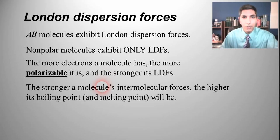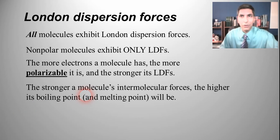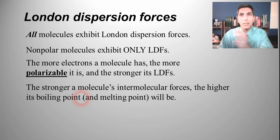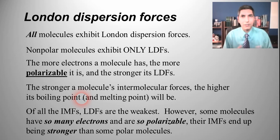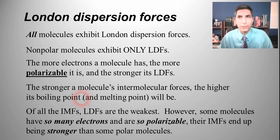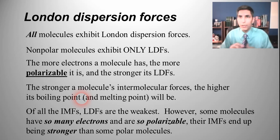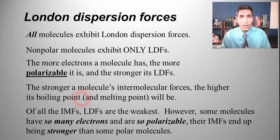The more electrons a molecule has, the stronger the polarization can be — so the more polarizable it is, and the stronger its London dispersion forces. Whenever you have a molecule with stronger intermolecular forces, its boiling point and melting point are going to be higher. So we can tie the number of electrons a non-polar substance has to its boiling point and melting point. Generally speaking, London dispersion forces are the weakest of all intermolecular forces — however, very large organic molecules with so many carbons and hydrogens can have LDFs stronger than some polar molecules.